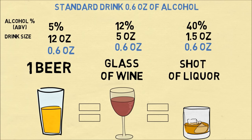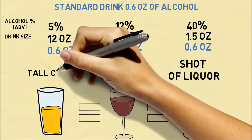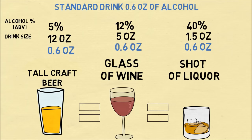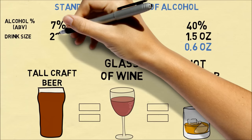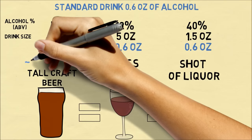But what happens in practice? Let's say you go to a bar and order a tall craft beer. Now, very likely, this tall craft beer may have 7% alcohol, and a tall beer is often served in a 23-ounce glass. So what you end up with is about 2.7 standard drinks.